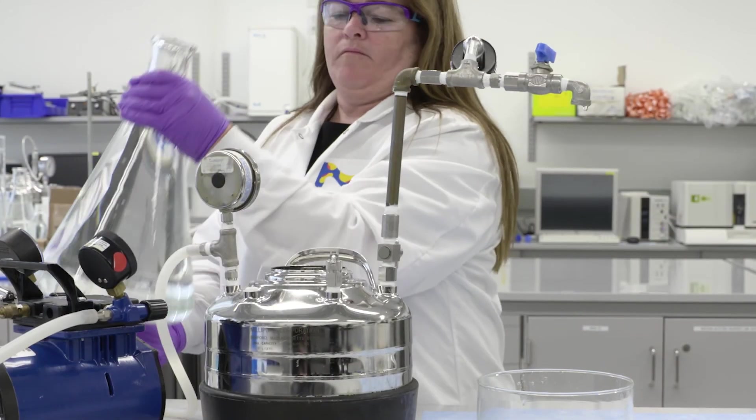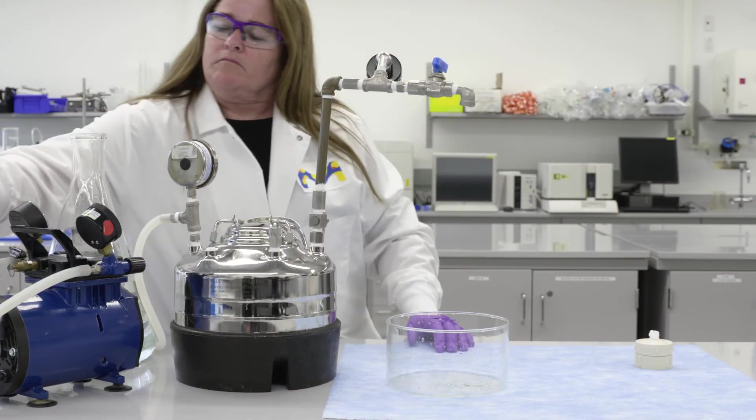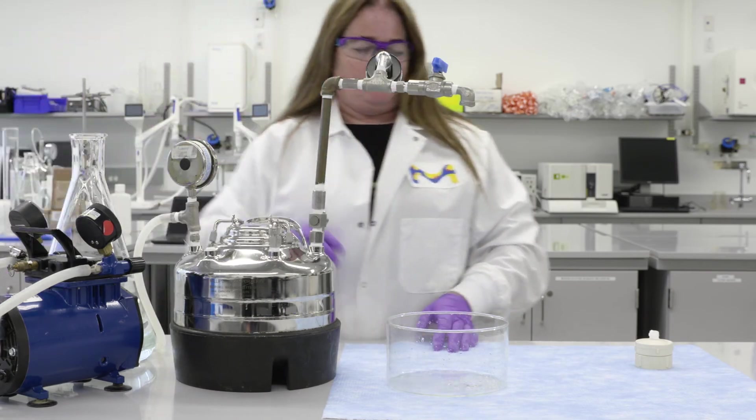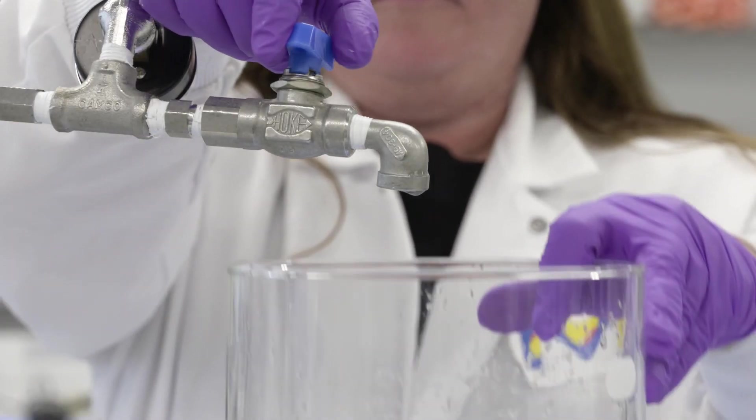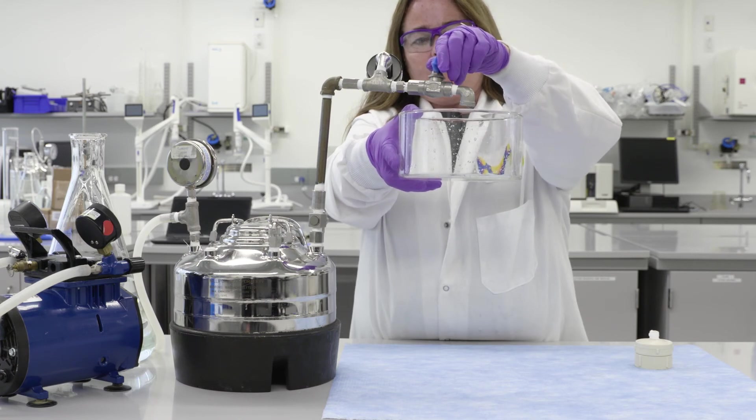Fill the dispensing pressure vessel with the sample to be filtered. Pressurize your system. Open the outlet valve to purge the outlet port and fill line. Turn off valve to stop flow.